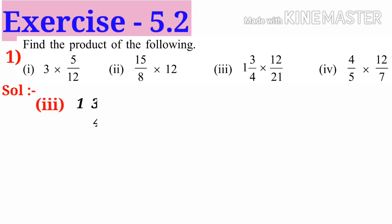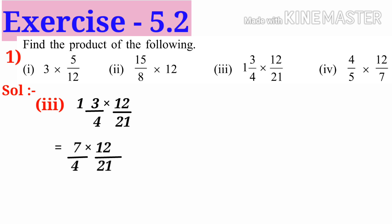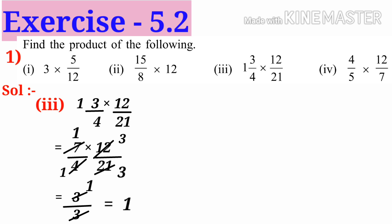The first is a mixed fraction, so convert it into an improper fraction: 4 × 1 + 3 = 7, giving 7/4 × 12/21. By simplification, divide by 4 to get 1 and 3; divide by 7 to get 1 and 3. Numerator: 1 × 3 = 3, denominator: 1 × 3 = 3. By simplification divide by 3, so the answer is 1.